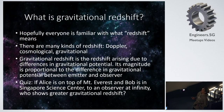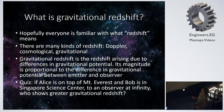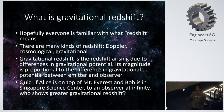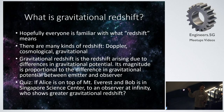I'm focusing on gravitational redshift. It arises from differences in gravitational potential, and the magnitude is proportional to the difference in gravitational potential between the emitter and the observer. You can consider the quiz at the bottom, which should illustrate what the essence is.